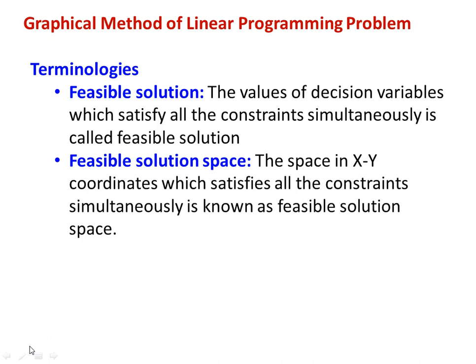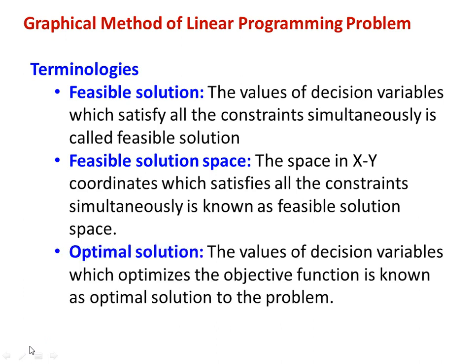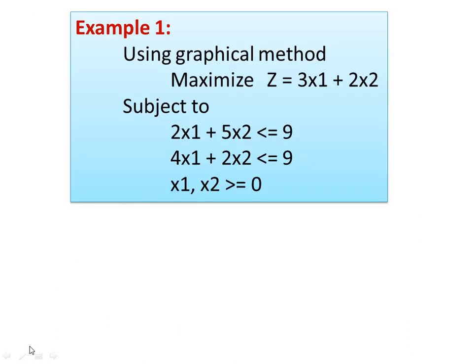From the feasible solution space, any point or any X1, X2 value within the space will satisfy all the constraints and that will give the answer. But among the answers, which is the best answer — the optimal answer? The value of the decision variable which optimizes the objective function is known as the optimal solution of the problem. The value within the space which will optimize the objective function is called the optimum solution.